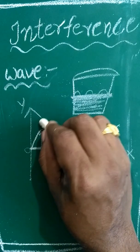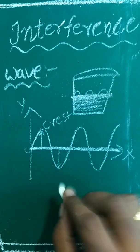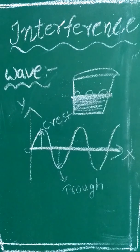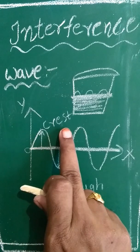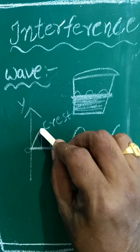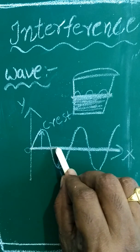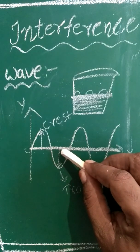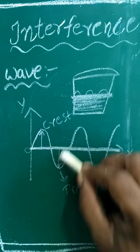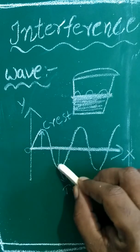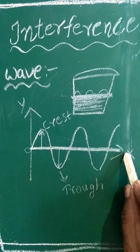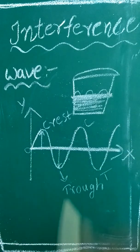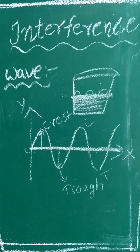The upward portions are called crests and the downward portions are called troughs. Crest means the section of the wave that rises above the undisturbed position. Trough means the section which lies below the undisturbed position. A wave consists of alternate crests and troughs.